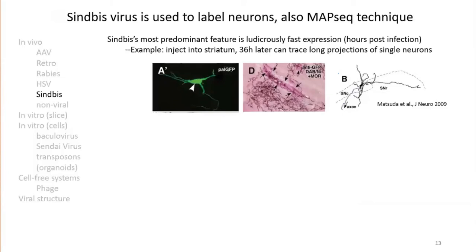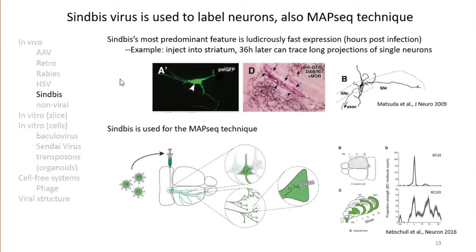Another virus expressing extremely quickly in neuronal tissue is the Sindbis virus, which can infect and label neurons very intensely within 36 hours, and it labels very sparsely — allowing good axonal and dendritic tracing. However, potent viruses tend to be more lethal to cells. One technique using Sindbis is MAPseq, where each viral particle carries a unique tag. Since infection is sparse, you can section the brain and sequence it to see whether single neurons in a given tissue project to one or multiple brain areas — a sophisticated form of dye tracing.